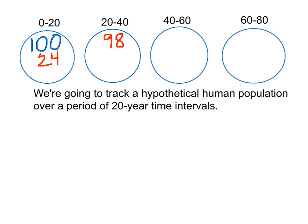What I'm showing here with the red numbers is what we have after 20 years based on the 100 that we started out with in the 0-20 range. Those 100 starters are responsible for there being 98 survivors in this group after 20 years, plus 24 new births that happened during that time.